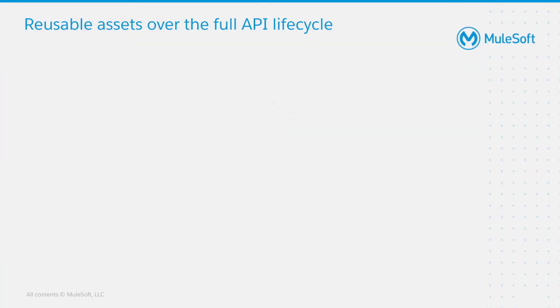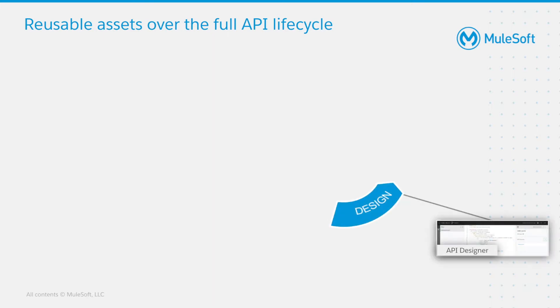Before we look into the parts of the platform where reuse can be achieved, let's have a quick look into the full life cycle of an API from first thought to final deployment. It all starts with Design Center, which is used to create the API specification or the contract. API designers will create the API specification by using RAML or OAS as a language.